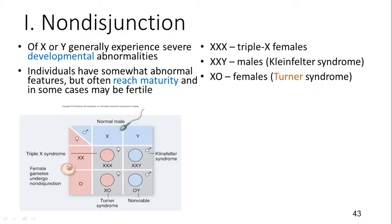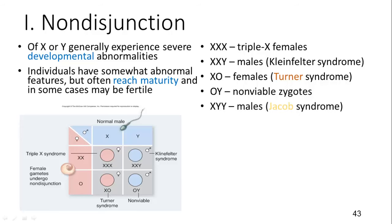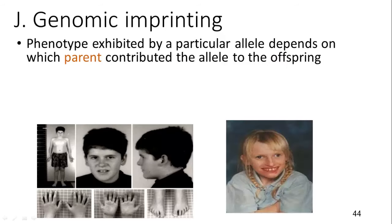Some other examples include XXX females, XXY males which is called Klinefelter syndrome, and XO females which is called Turner syndrome. You cannot live without an X chromosome as it carries very important traits. So OY individuals will not survive. XYY males have another syndrome called Jacob syndrome. All of these are different abnormalities involving the sex chromosomes.